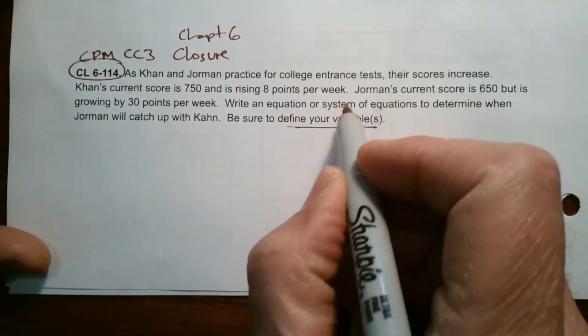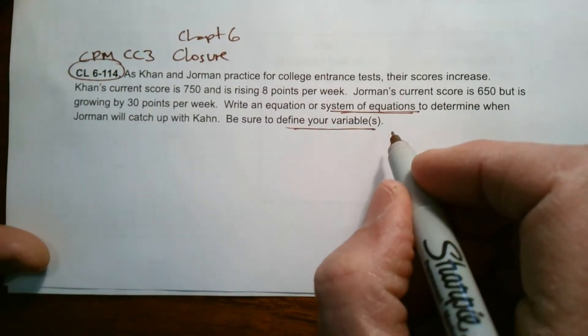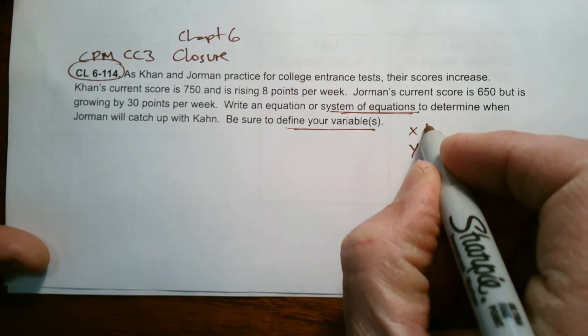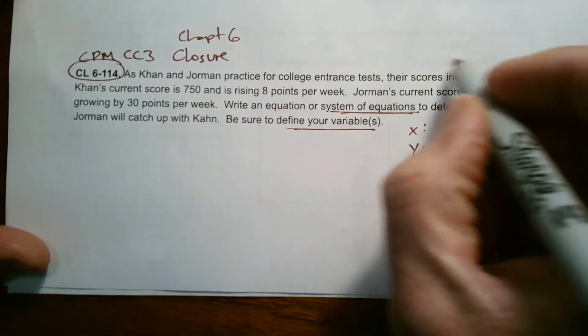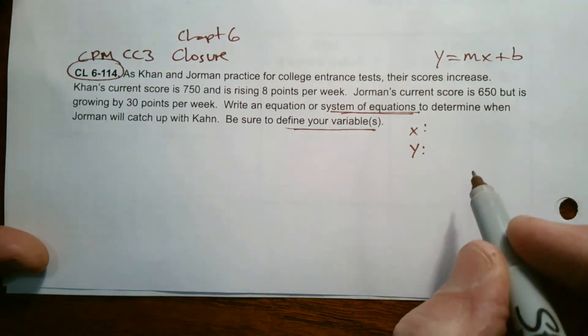So if I'm thinking about a system of equations, a system of equations is going to be writing an equation that contains an X and a Y. And normally it's in the form Y equals MX plus B, where M is your growth.